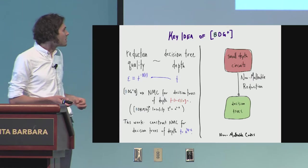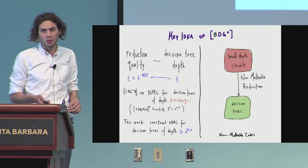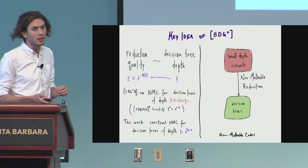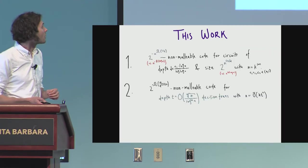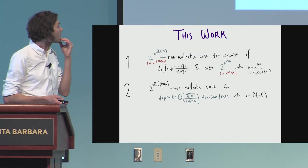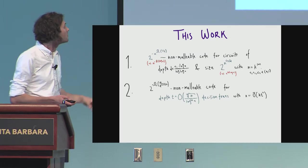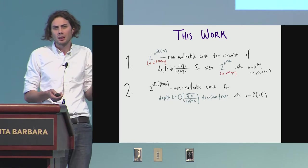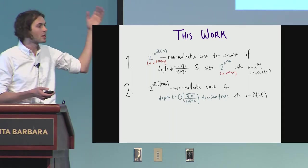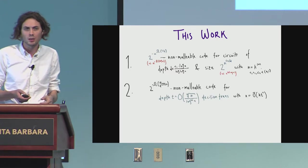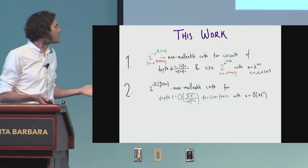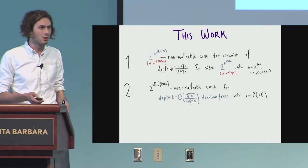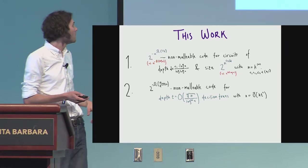But in this work, we construct non-malleable codes for decision trees of small polynomial depth, in particular, approximately n to the one-fourth minus epsilon. So this is exactly what we do. Construct these non-malleable codes, and I should mention that we think these things are independently interesting. So it's not like this is a strict subset of small depth circuits. It is if the circuits are large enough, but it's independently interesting in this parameter regime.